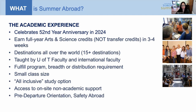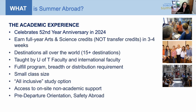In terms of summer abroad, we are celebrating our 52nd year anniversary this year. Our model of having short-term course study abroad, giving students the opportunity to gain a full year credit in just a few weeks, has been very successful and attracted many students throughout the years. It's a chance for you to earn a full year arts and science credit — not a transfer credit — in three to four weeks. This year, we're offering over 15 destinations including Oxford. Our programs are mostly taught by U of T faculty and international faculty, and in Oxford's case, completely by U of T faculty.